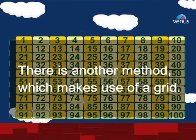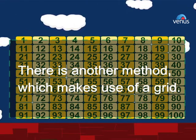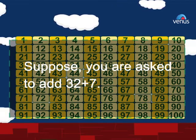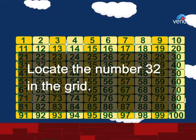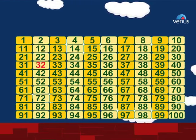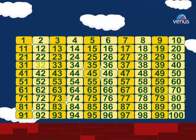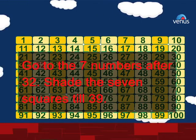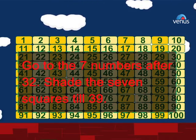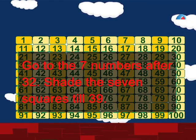There is another method which makes use of a grid. Suppose you are asked to add 32 plus 7. Step 1: locate the number 32 in the grid. Step 2: go to the seven numbers after 32, shade the seven squares till 39.